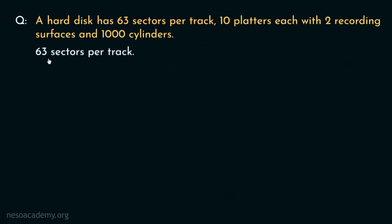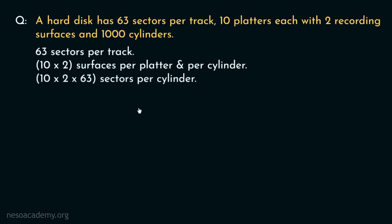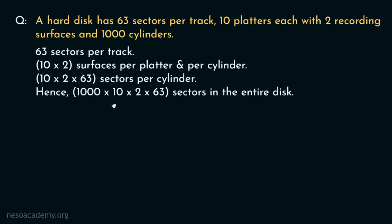There are 63 sectors per track, and 10 platters times 2 surfaces gives 20 surfaces per cylinder. Therefore, in each cylinder there are 20 times 63 sectors. With 1000 cylinders total, the total number of sectors in the entire disk is 1000 times 10 times 2 times 63, which gives us the total sector count.